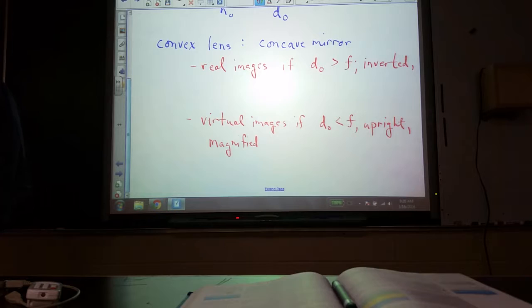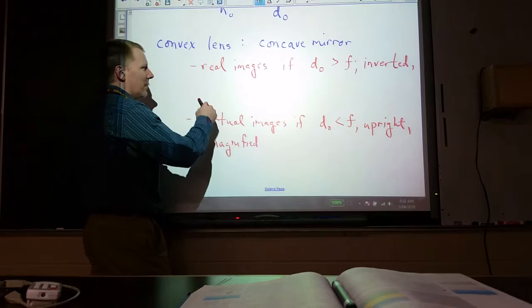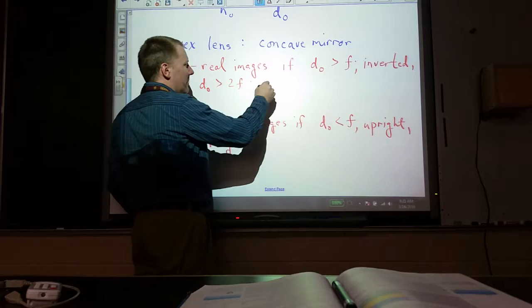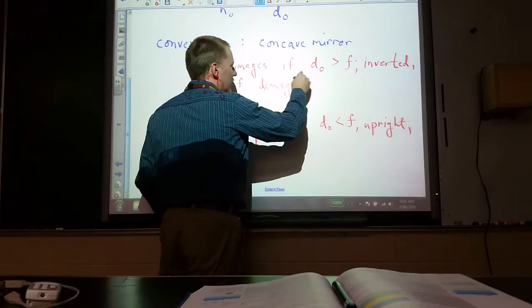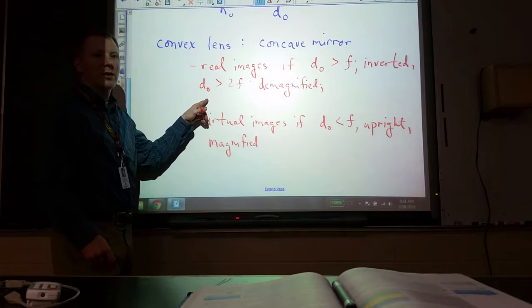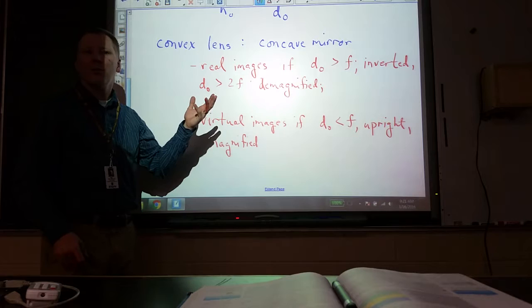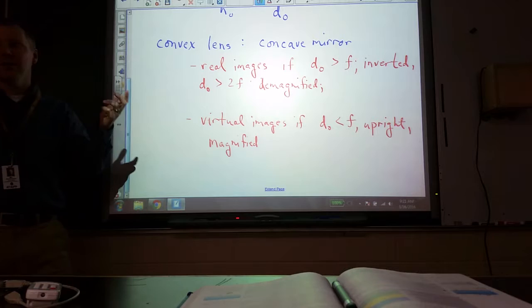Can we say it's demagnified for real images? We actually saw when drawing that not always. It works out that if the object distance is greater than twice the focal length images smaller so it's demagnified. If it's in between 1 and 2f it's actually magnified. This is not something I'd expect you to just be able to spit out. Probably something that if I gave you I said sketch it or calculate it you should be able to figure it out but not something you would just know.